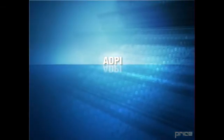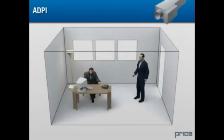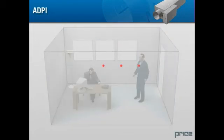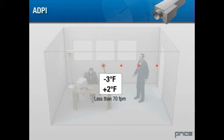ADPI. Now that we understand what draft temperature is, here's how it can be used in determining the comfort level in any room. Equipment can be set up to measure temperatures and velocities at uniformly distributed points in a room. If at each point the draft temperature is within the minus 3 degrees Fahrenheit to the plus 2 degrees Fahrenheit range, and the local velocity is less than 70 feet per minute, then that point meets the comfort criteria.